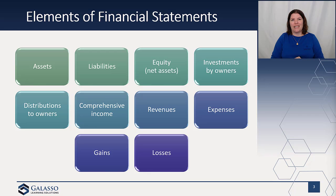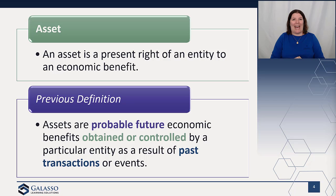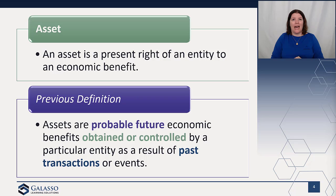We're going to look at the definitions that had the largest change and take a look at a before and after. The definition of the word asset is probably the most shocking — they took out a lot of verbiage. The new definition is much shorter: an asset is a present right of an entity to an economic benefit. The previous definition included concepts like probable future economic benefit, obtained or controlled, and a result of a past action or event. They decided to remove the concept of probable future, noting that even if probability was low, that didn't necessarily mean it was not an asset, but the term was confusing.